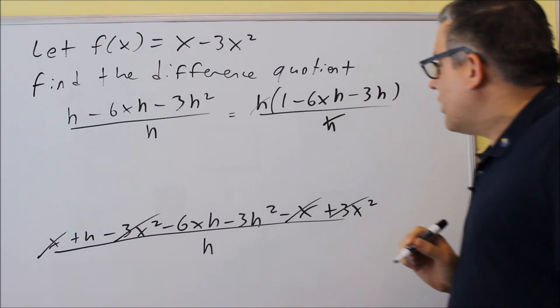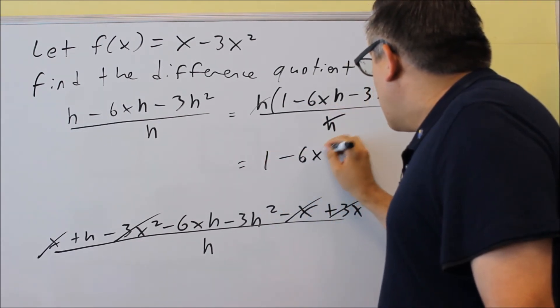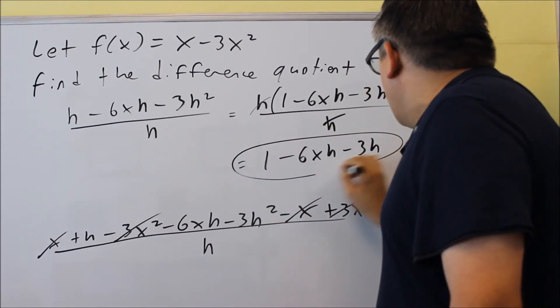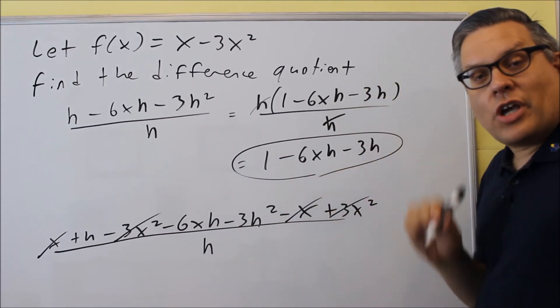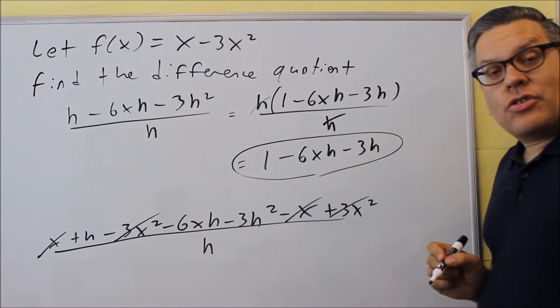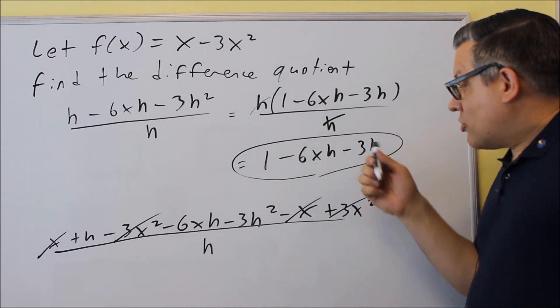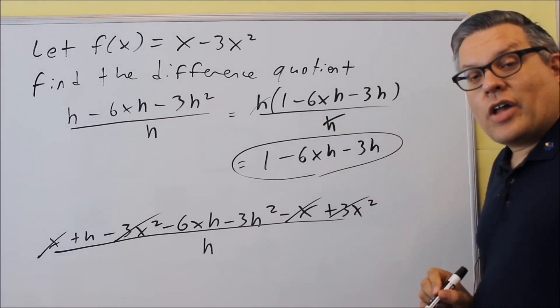So because those cancel out, I'm left with this is the answer: 1-6x-3h. And this is what you put for your answer. We don't have any special notation for difference quotient. You can just simply write that down on the answer blank. So this would be your final answer. It's okay to have h's as part of your final answer.